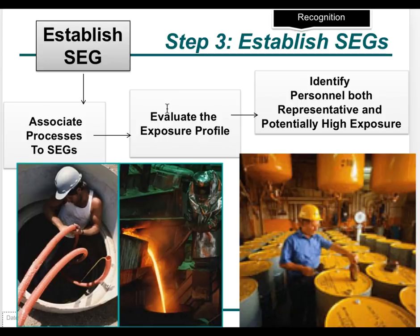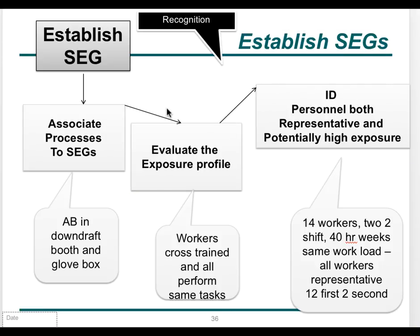For this example, all 14 workers in the facility worked both in the downdraft booth and with the glove box. All workers were cross-trained to do both jobs, and therefore it was felt they very likely had similar exposures. The 14 people were aggregated into a single similar exposure group — they all did both jobs, performed tasks in similar ways, and worked in both the downdraft booth and the glove box.